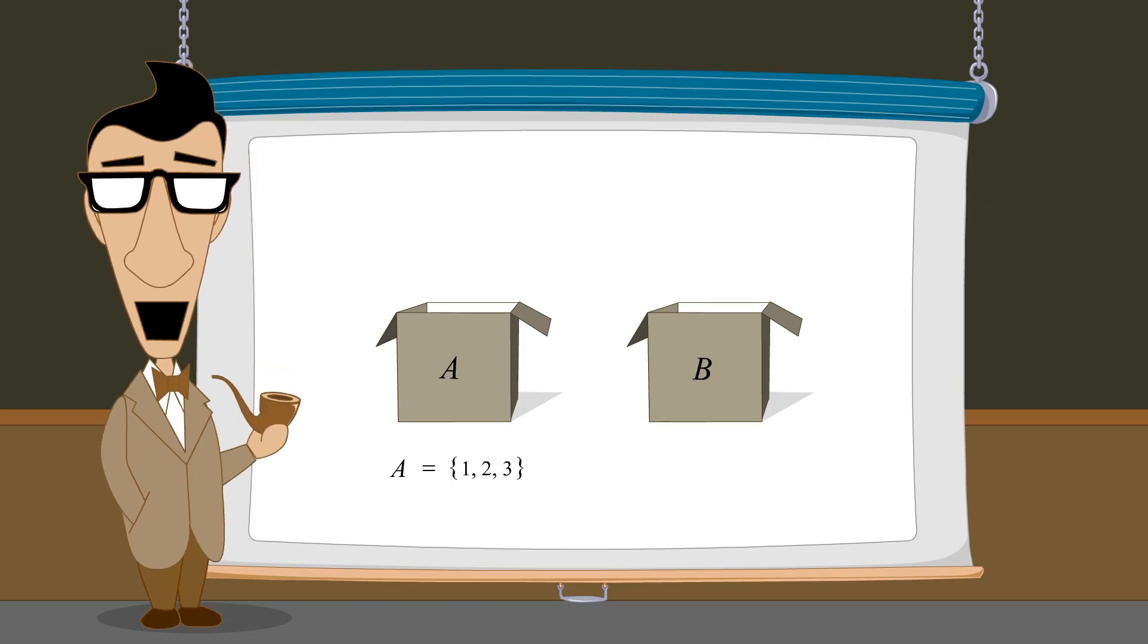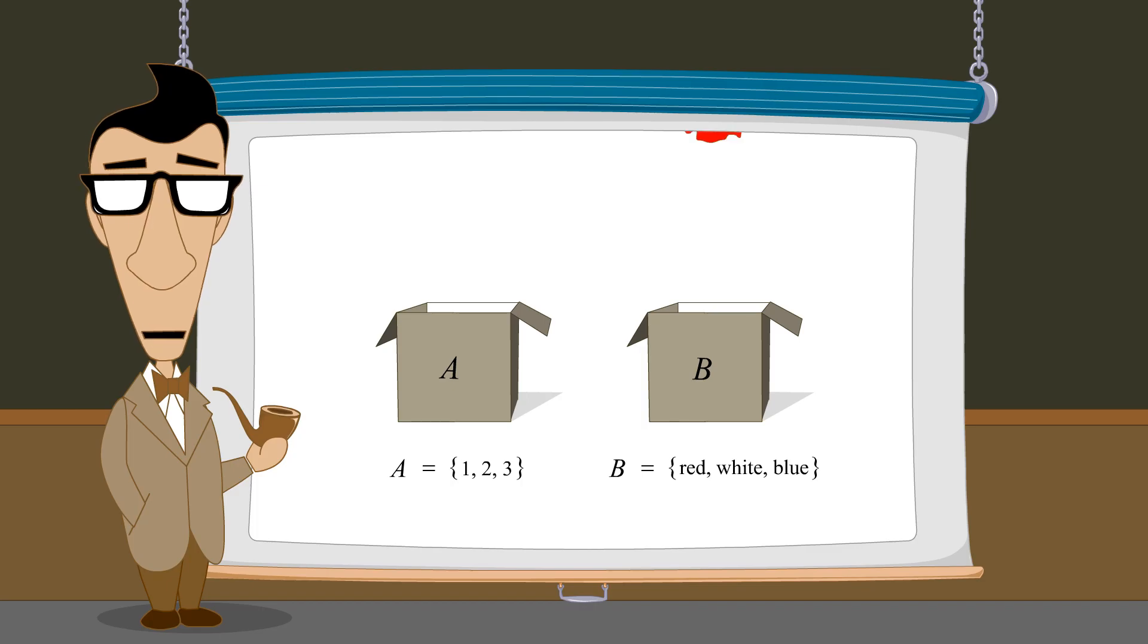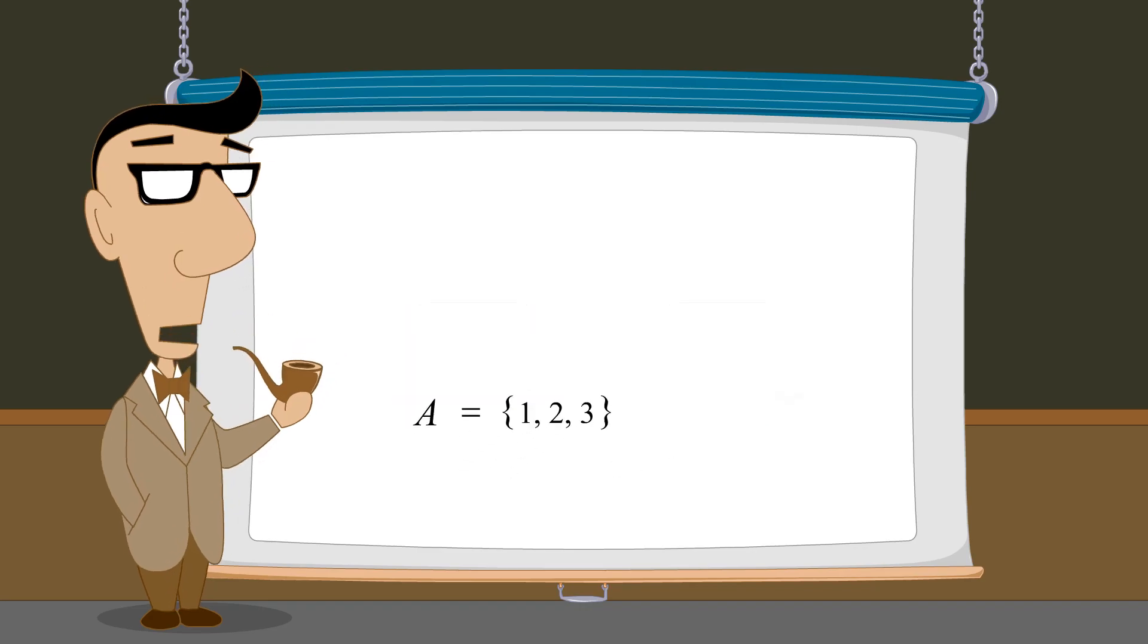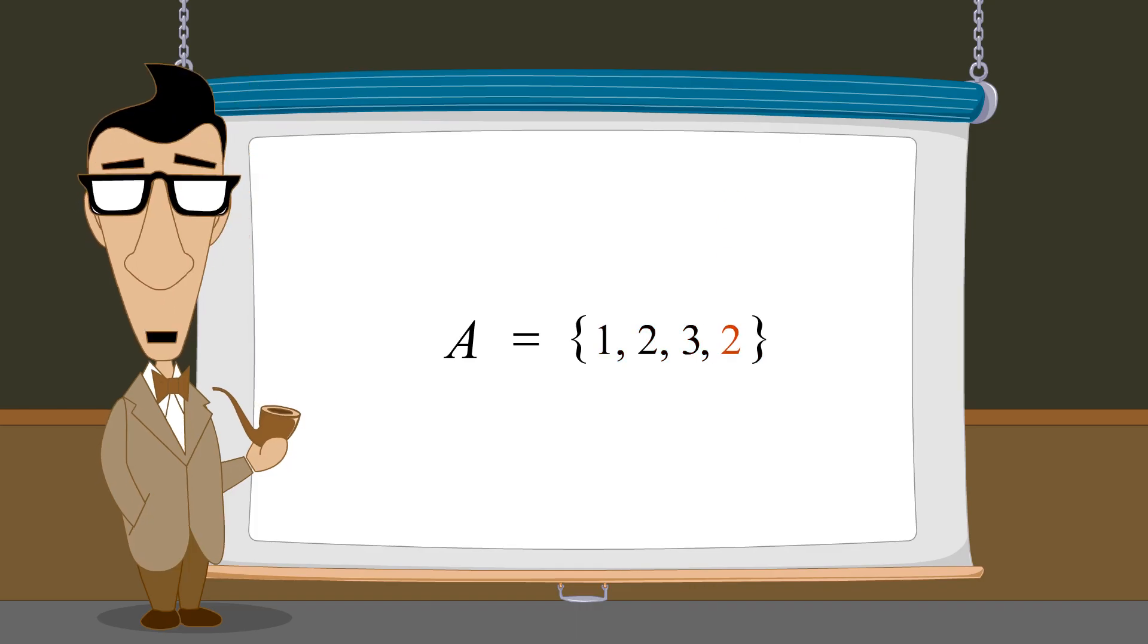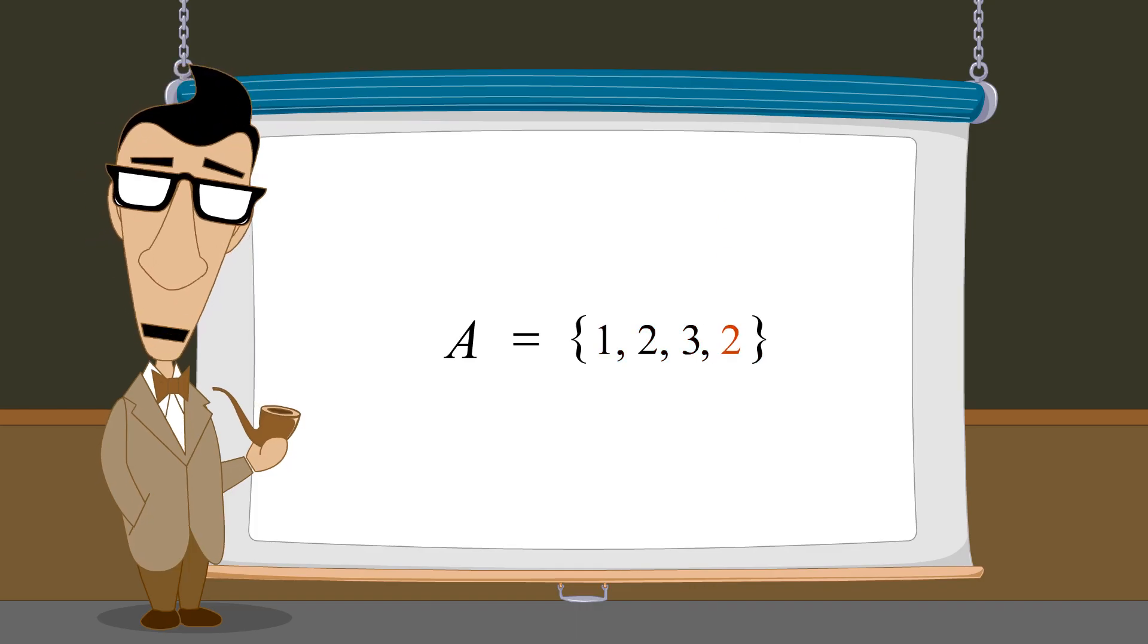Or we can define set B to be the set whose members are the colors red, white, and blue. An important rule to remember when listing the members of a set is that each element must be unique. No two members of a set may be the same.